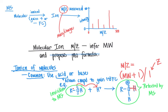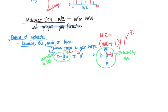Subtracting that 1 proton takes us back to the molecular weight of the original alcohol. Many modern instruments can read the mass-to-charge ratio out to several decimal places — what we call high resolution. With high-resolution mass spectrometry, we can match that exact mass with particular molecular formulas using a database to determine the molecular formula of the molecule.